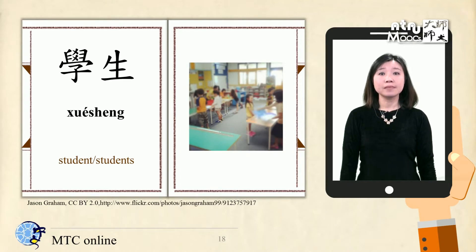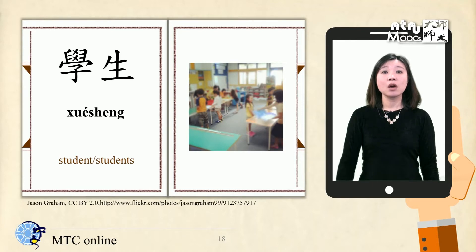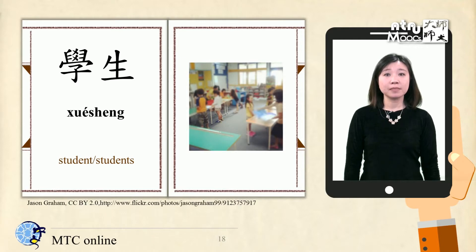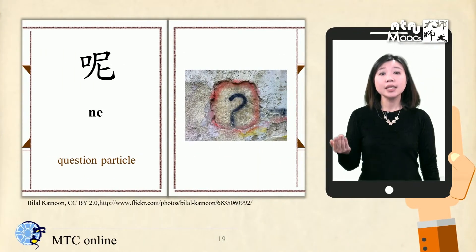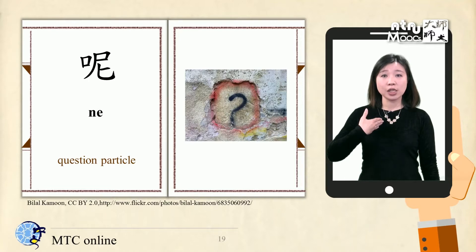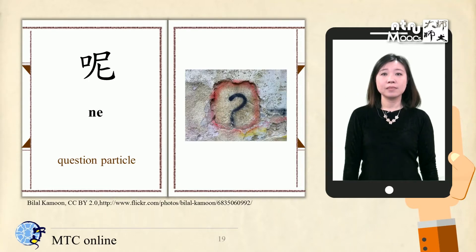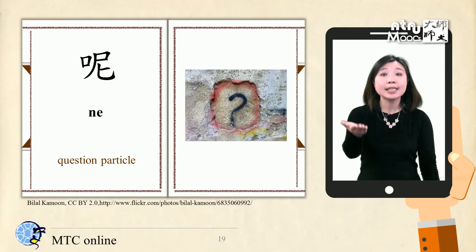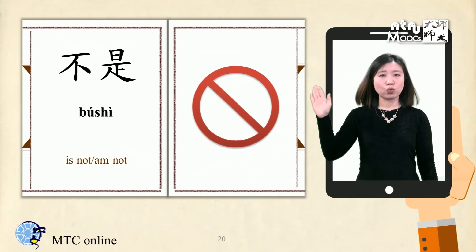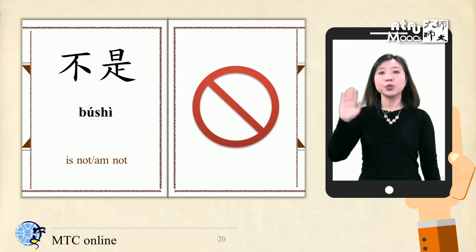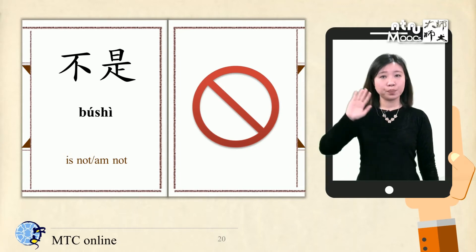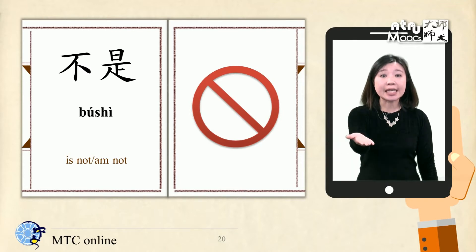学生。我不是学生。我不是学生。我是老师，你呢？我是老师，你呢？不是，我不是学生，你是学生。